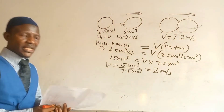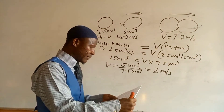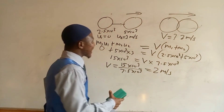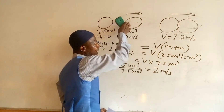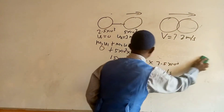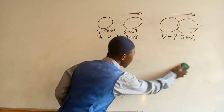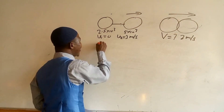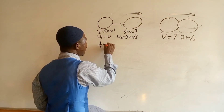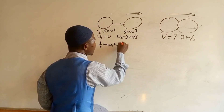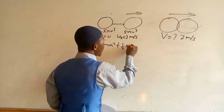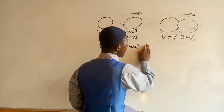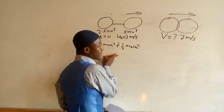Next, we need to calculate the loss in kinetic energy of the system. We calculate the kinetic energy before collision and the kinetic energy after collision, then subtract. The formula for initial kinetic energy is: KE_initial = ½·m1·u1² plus ½·m2·u2². Since u2 is zero, the second term is zero, so we only calculate the first part separately.